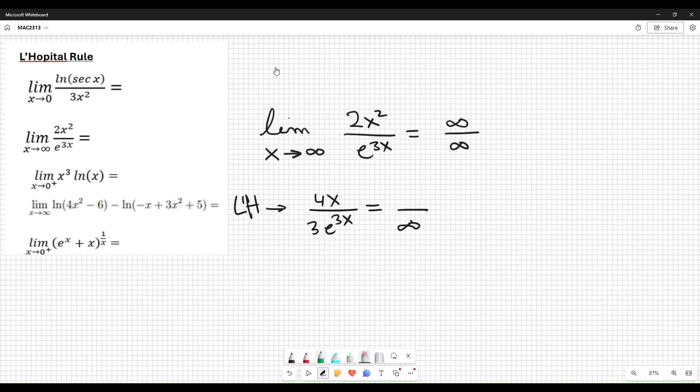Therefore, we continue. Derivative of 4 is 0. Derivative of 3e to the 3x is 9e to the 3x. Now plug it in. 4 over e to the 3x. And this exponential to infinity is infinite. Now 4 divided by infinity is 0.